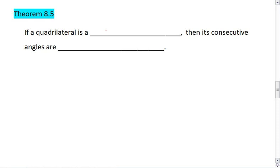Theorem 8.5 tells us that if a quadrilateral is a parallelogram, then its consecutive angles, so the angles that are side by side, are supplementary.